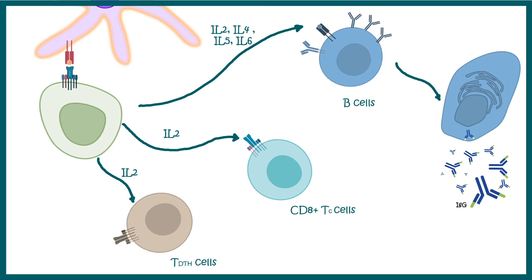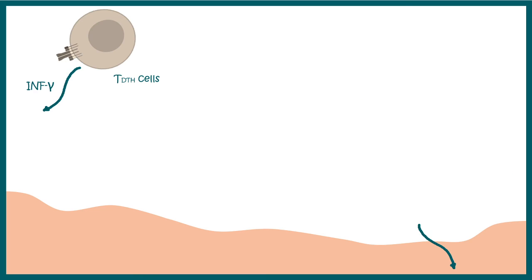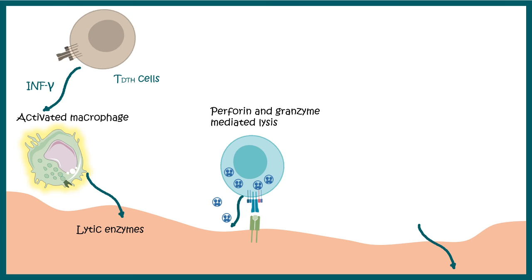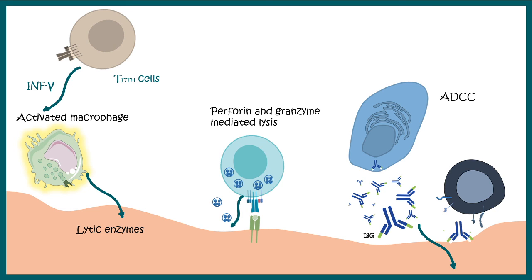The secreted cytokines activate different cell populations including CD8 cytotoxic T cells, B cells, and DTH cells. In the effector phase, DTH cells secrete interferon-gamma, which activates macrophages that release lytic enzymes damaging the tissue. CD8-positive cytotoxic T cells secrete perforin and granzyme to lyse the tissue. Additionally, antibodies can target specific epitopes on the grafted tissue, triggering antibody-dependent cytotoxic responses by natural killer cells. Together, these mechanisms cause apoptosis and extensive necrosis, leading to graft rejection.